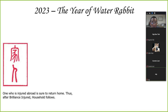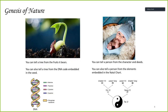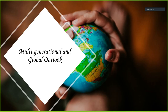Let's begin part 2 of today's session. As we explore the itinerary, part 2 is where we look into the country's outlook for Malaysia. We'd like to start off with the multi-generational global outlook, then move to the country outlook, market outlook, before going into the personal outlook in terms of wealth, relationship, and health — all from the feng shui or metaphysics perspective.